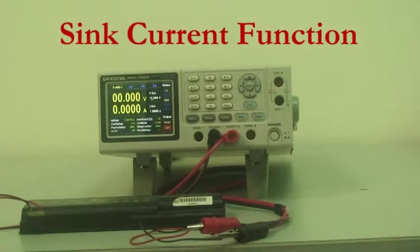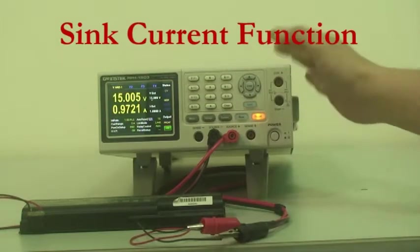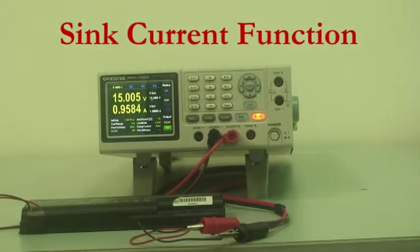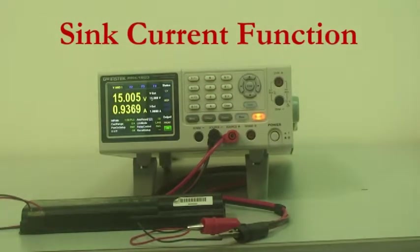Set PPH1503 output voltage to 15V and 1A and press output. Now PPH1503 has a positive current measurement, which means that PPH1503 is charging the battery.